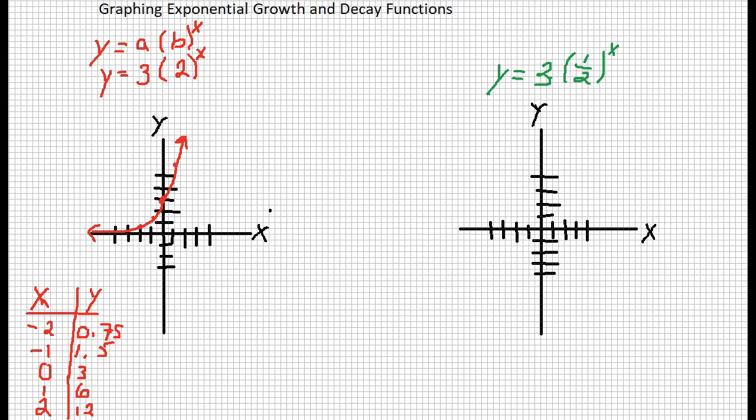Now, let's do our decay graph. We have y equals 3 times 1 half to the x power. I picked these two on purpose, so you could see some similarities and differences with these two graphs. Now, what if I were to plug in the same values? Negative 2, negative 1, 0, 1, and 2.